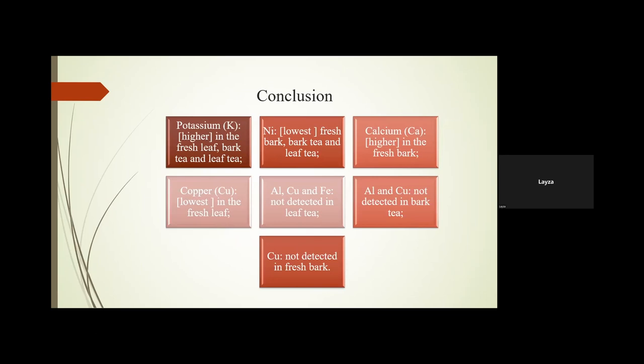To summarize the key findings: potassium is highest in fresh leaves, bark tea, and leaf tea. Nickel is at the lowest concentration in fresh bark tea and leaf tea. Calcium is only higher in fresh bark. Copper is lowest in fresh leaves. Aluminum, copper, and iron were not detected in leaf tea, so drinking leaf tea for iron intake will not work. Aluminum and copper were also not detected in bark tea, and copper was not detected in fresh bark either.